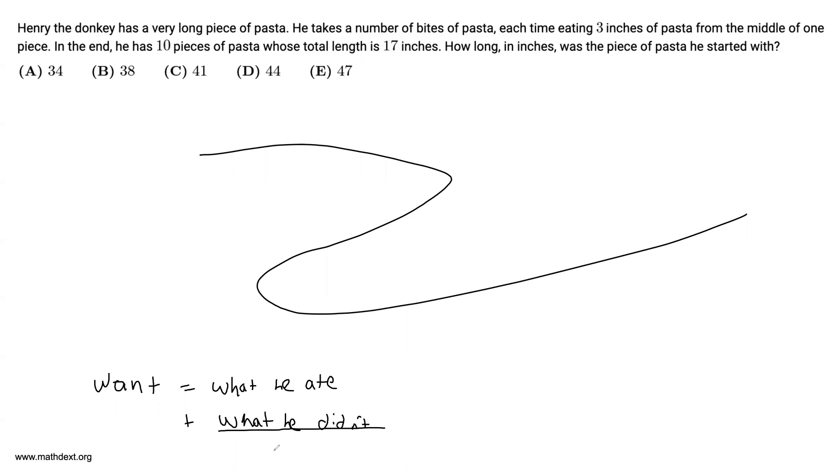And we already know that what he didn't eat was 17 inches. So what we need to do is find out what he ate. And we aren't given that. All we're given was that each time he took a bite, he took three inches off, and he has 10 pieces after he finished eating. So let's get a sense of how this eating process will work if you're Henry.